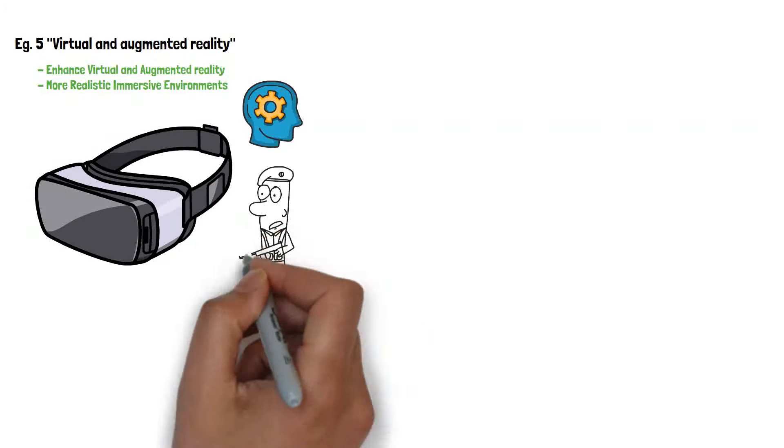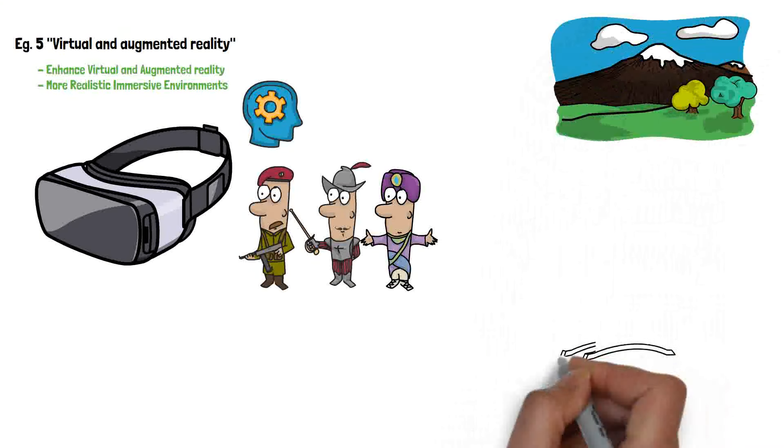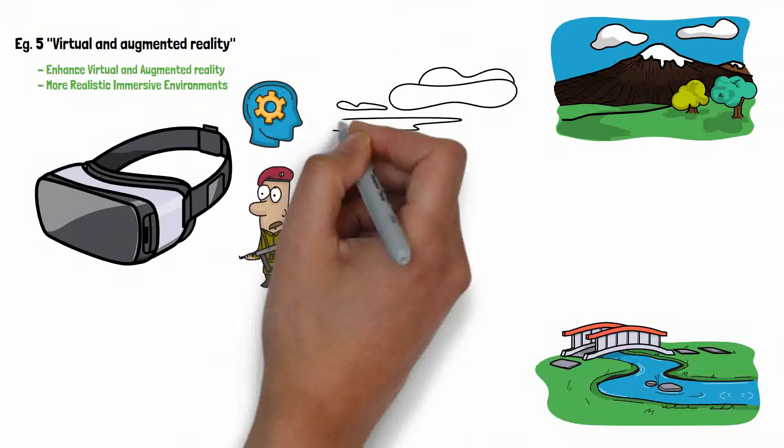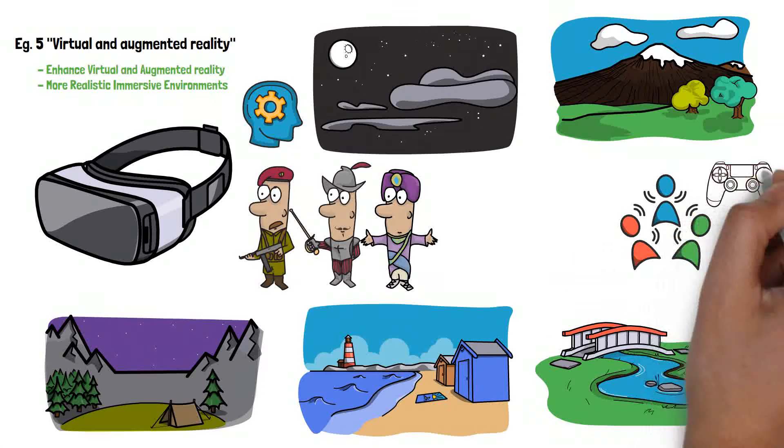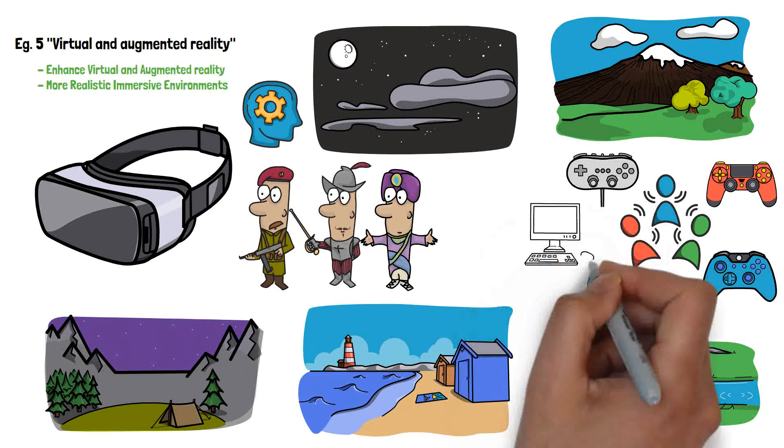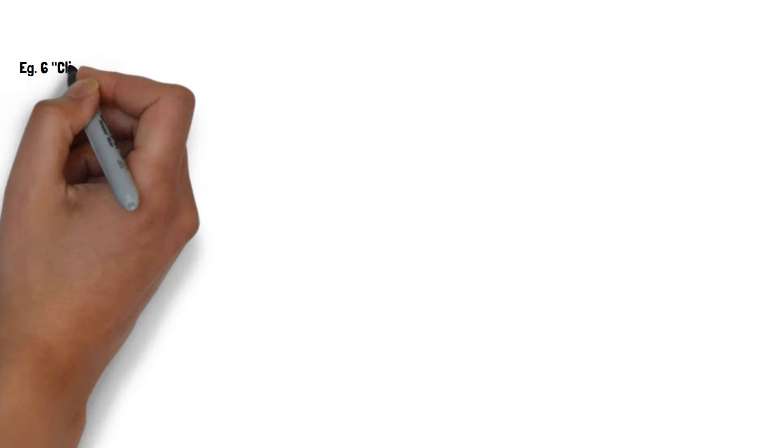Another example, and a possible favorite for me, is virtual and augmented reality. AI could be used to enhance virtual and augmented reality experiences creating more realistic and immersive environments. This is likely to turn the gaming industry on its head in the near future.